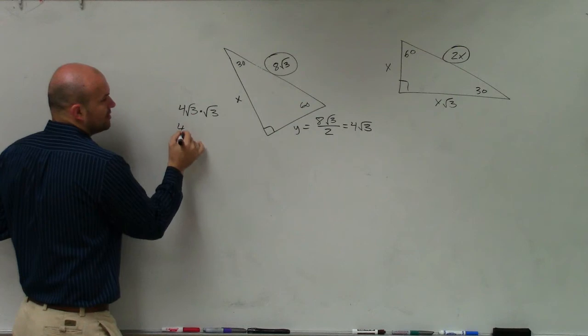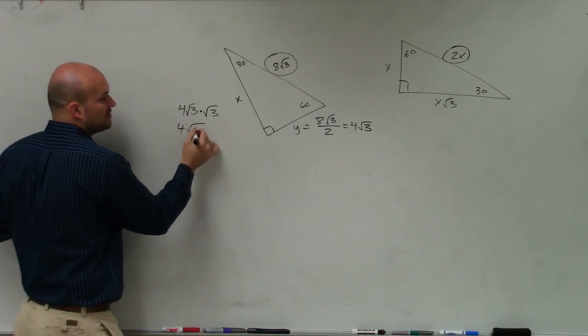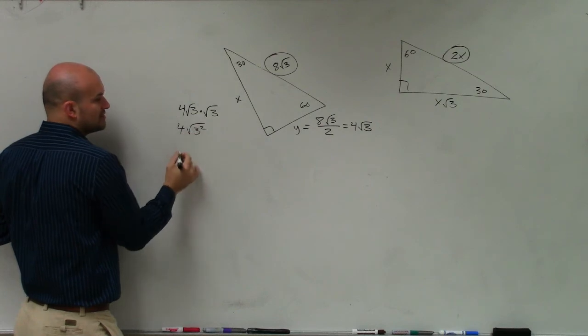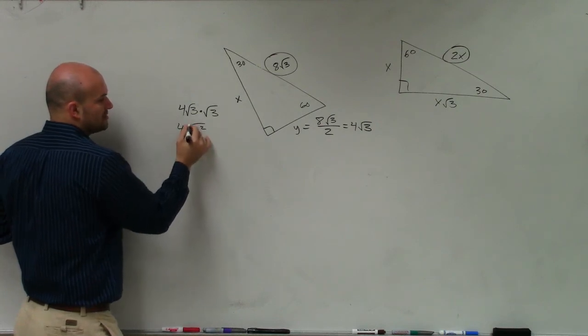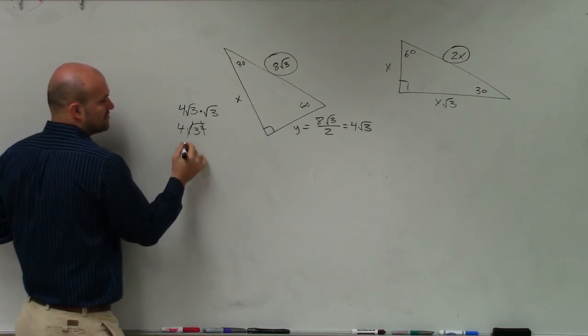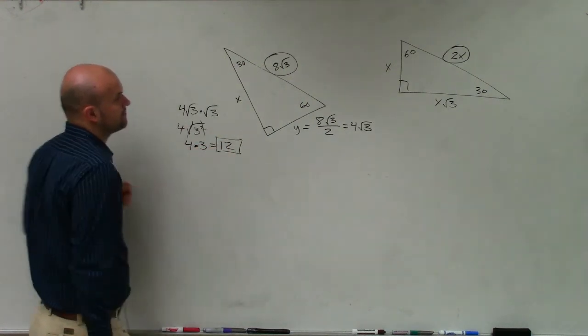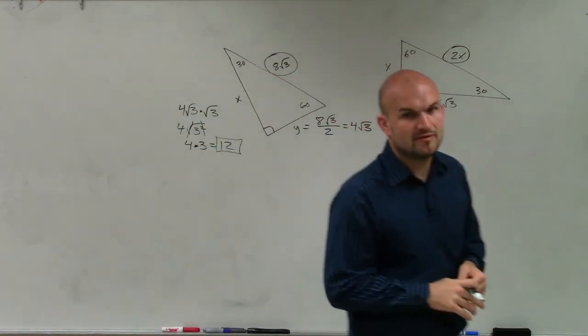So 4 square root of 3 times square root of 3 is square root of 3 squared. The square root of 3 squared is just going to become 3. So it's just 4 times 3, which equals 12. And that would be your final answer.